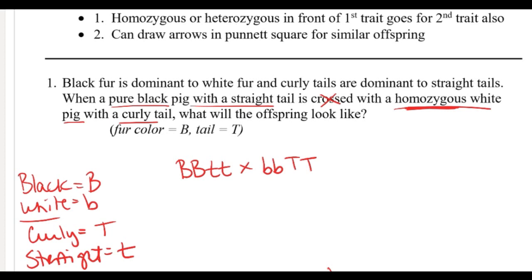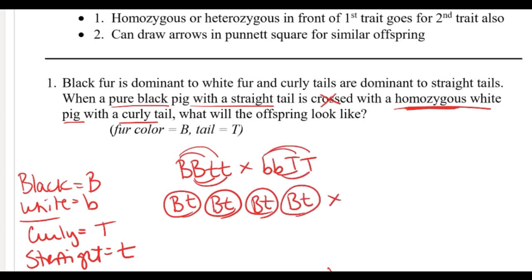Always go and double-check your symbols, double-check your parents, and then we're going to make our gametes. Definitely double-check your gametes. So the gametes - remember we're going to use the FOIL method - so that's going to be the first pair and then the second pair. These are going to all be the same.